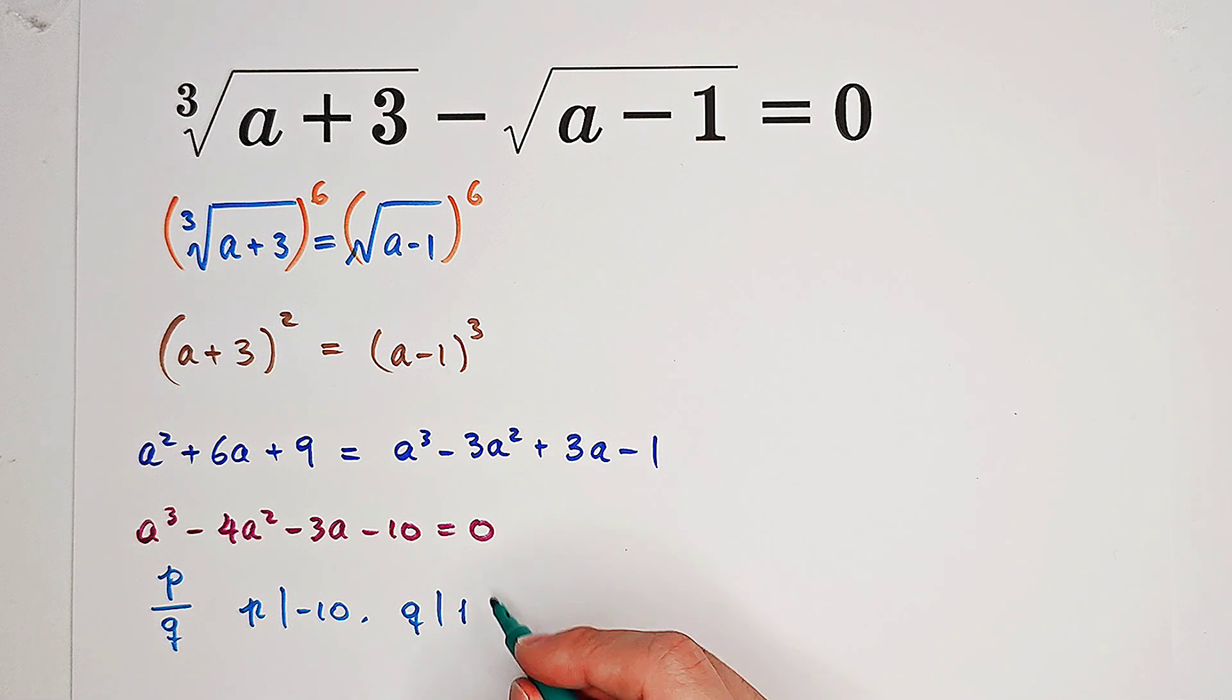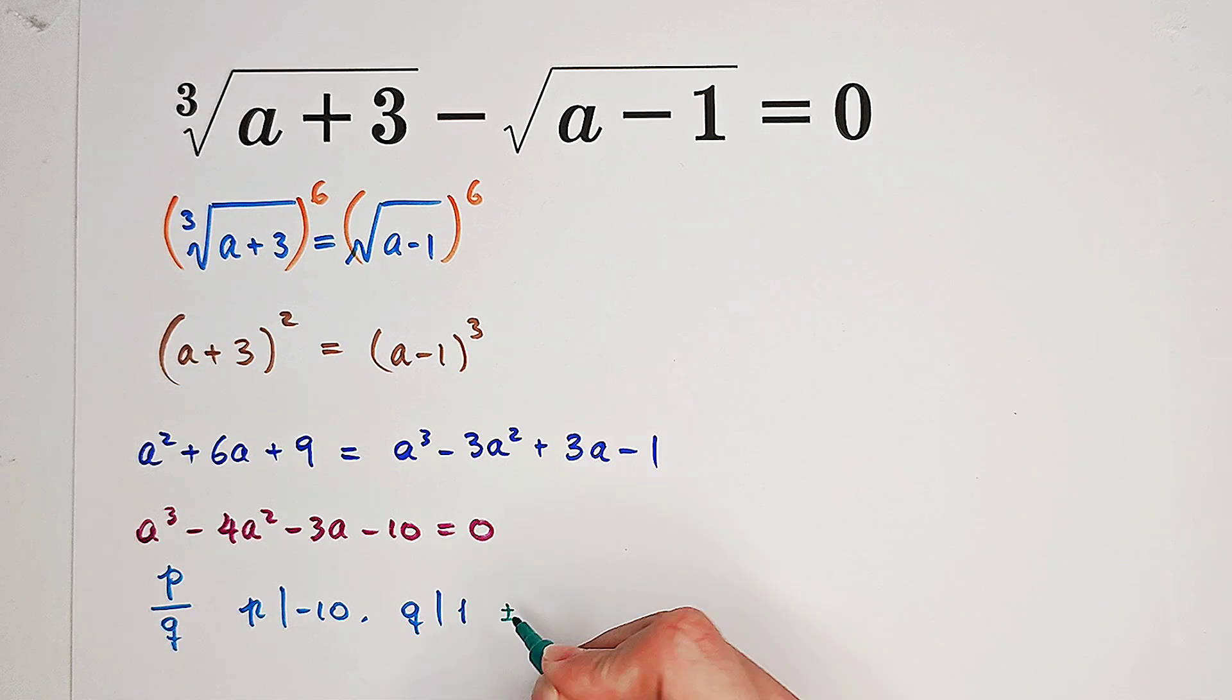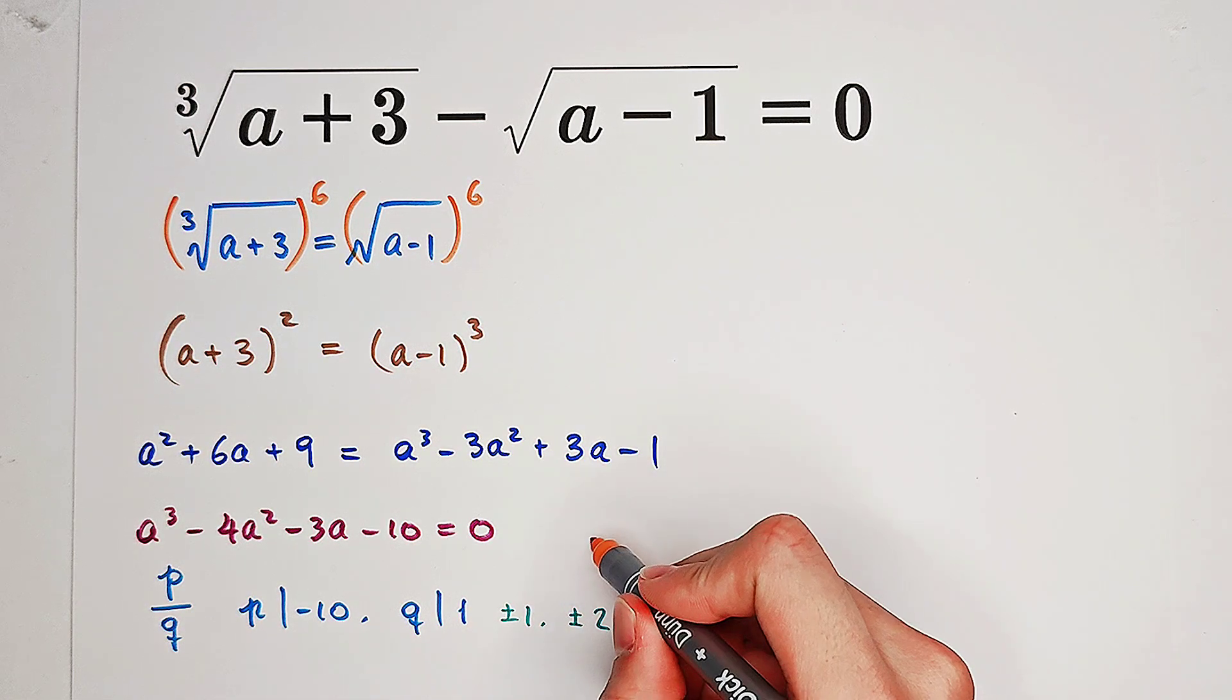So the rational roots may be positive or negative 1, positive negative 2, positive negative 5, positive negative 10. And you can find out that a equals 5 is a root.